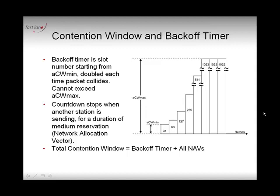You pick up this number and count down. Every time you count down one number, you listen to the air. If you hear another station sending, you'll hear in the frame header a duration value — how long the medium is going to be occupied — called the network allocation vector (NAV). You stop counting for the duration of the NAV, then resume your countdown from where you left. The total time waiting before sending is the backoff timer plus all NAVs heard, which together form the contention window.